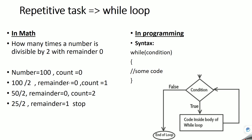100 can be divided by 2 and gives remainder 0, so count becomes 1. Then 100 becomes 50, and 50 divided by 2 also gives remainder 0, so count becomes 2. Next, 25 divided by 2 gives remainder 1, so we stop. We can divide 100 by 2 exactly 2 times with remainder 0.